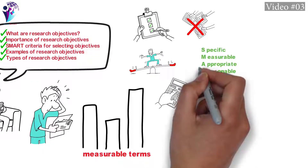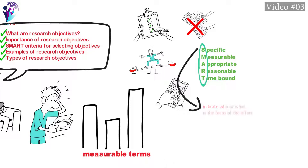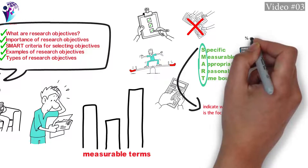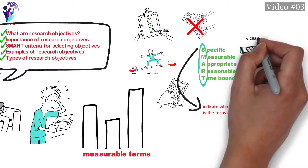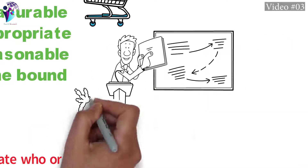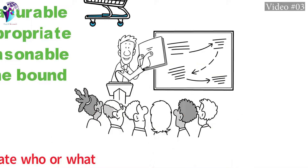The SMART acronym is an easy way to remember the key features of well-developed program objectives. The objectives should be specific, indicating who or what is the focus of the effort. They should be measurable and indicate a quantity such as percentage change. They should also be appropriate and sensitive to audience needs and preferences.